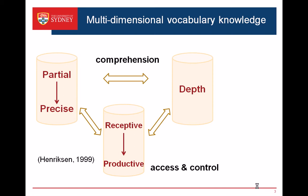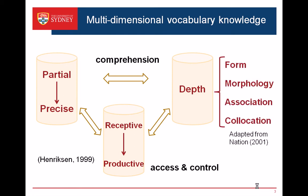This model differs from Nation's 2001 model, which we call a comprehensive model. He listed the most comprehensive list of word aspects, categorized into form, meaning, and use. Nation said they can be mastered either receptively or productively. Therefore, examining receptive to productive vocabulary knowledge should include other aspects and look at it systematically as a multidimensional construct. Except for Paul Meara's 2004 V-Links, which captures the depth dimension as a network, there are not many well-developed validated tests for that. I define this depth dimension as form, morphology, association, and collocation.